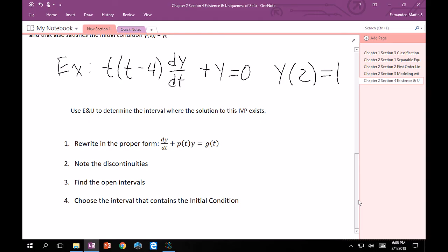Okay, so it might be harder to digest theorems at first, but if you follow these four steps, you should be able to get the right answer. Rewrite it the way the theorem states it, which is standard form for first order linear of dy/dt plus p(t) times y is equal to g(t).